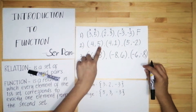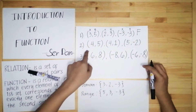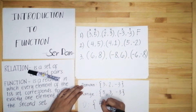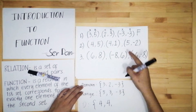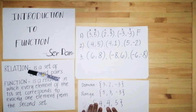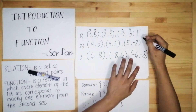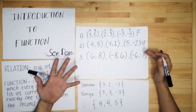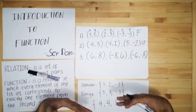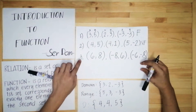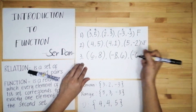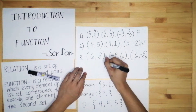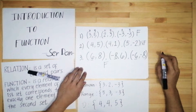For number two, we have ordered pairs (4,5), (4,1), and (5,−2). The domain values are 4, 4, and 5. As you can see, there are identical values — 4 appears twice — so this is not a function, because there is a repeated x value. For number three, the x values are 6, −8, and −6. There are no repeats, so number three is a function. That's how easy it is to identify.